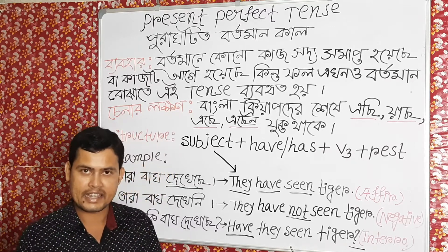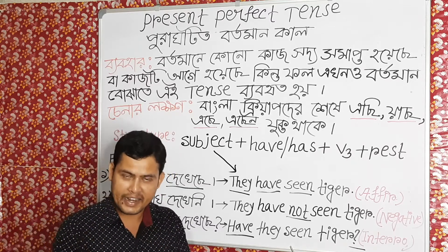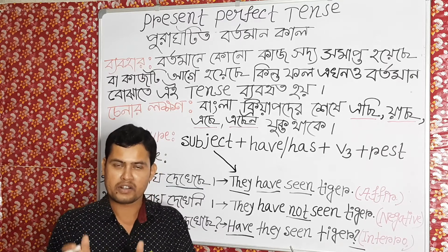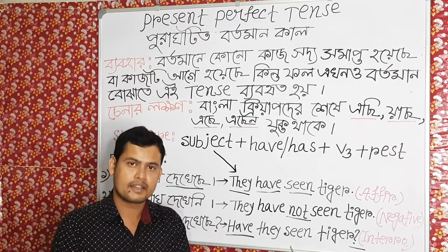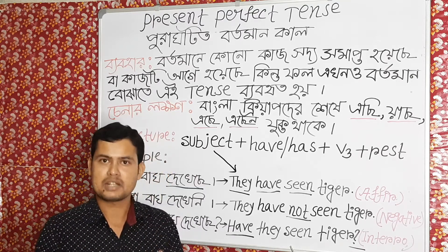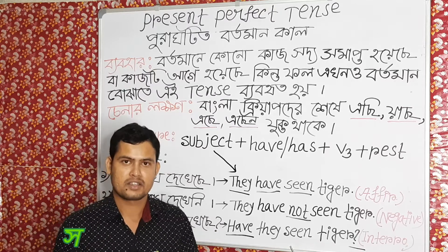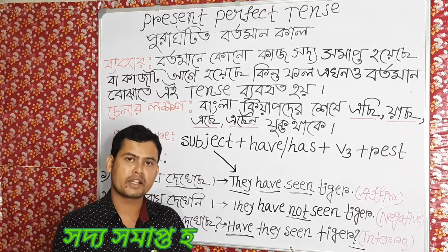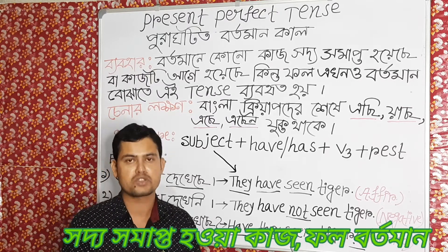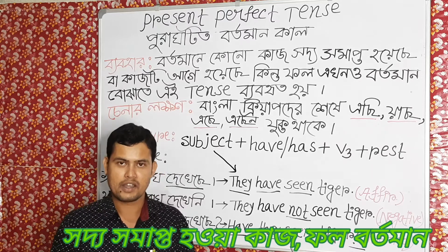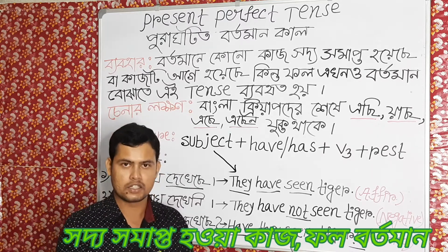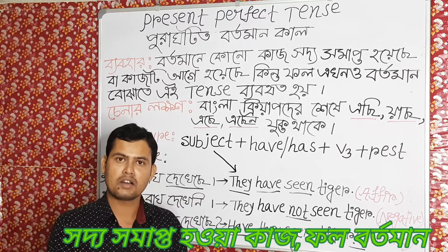This tense connects the present with the past. Or it links the present with the past. The present perfect tense bridges the present tense with past events.